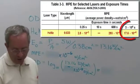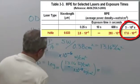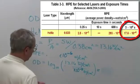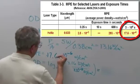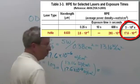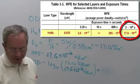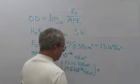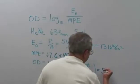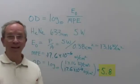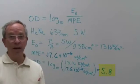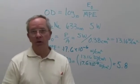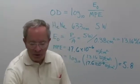That would be 17.6 times 10 to the minus 6, and that corresponds to 3 times 10 to the 4th seconds. Does anybody know what that would be? 3 times 10 to the 4th seconds is about 8 hours, a little bit more than 8 hours. And that would require an optical density of almost 6 in order to give you sufficient eye protection.